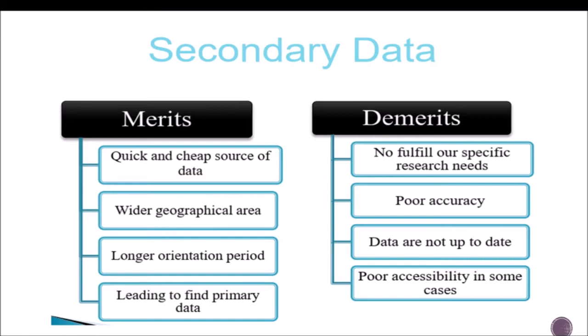Secondary data also has a longer orientation period and can help find primary data. The disadvantages include: it may not fulfill specific research needs, so the objective may not be achieved. There is poor accuracy, and the data may not be up to date because it has already been used. There is also poor accessibility in some cases — for example, a bank will not readily give its data due to the data privacy act; especially in the Philippines, we have a data privacy act in which we cannot get information of any person directly.